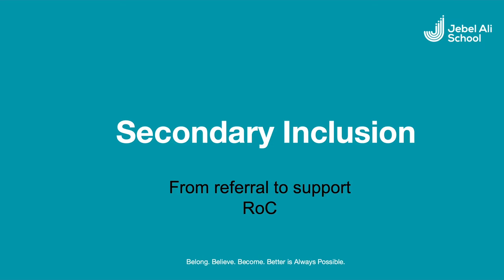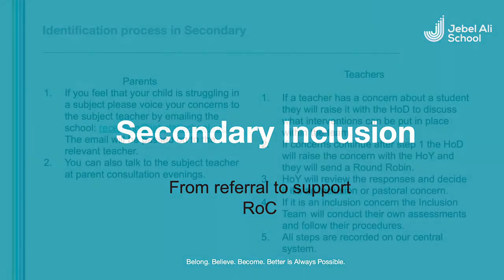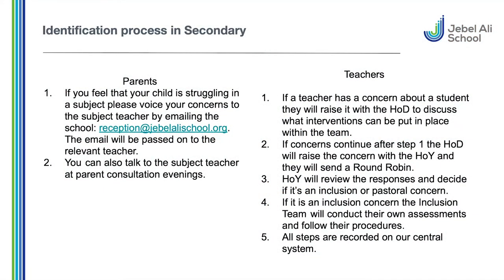Inclusion in secondary works in a very similar way. If a teacher feels they have concerns about a student, they will first raise it with their department and head of department, and discuss what interventions can be put in place. After a period of two to four weeks, if the concern is still ongoing, the department will raise their concern with the head of year. The head of year will then send out a document to all staff — called a round robin — to gather information and see if the concern is mirrored in any other subject within the school. Once they've reviewed all responses, it goes either to the inclusion team or, if it's a pastoral concern, to the pastoral team.